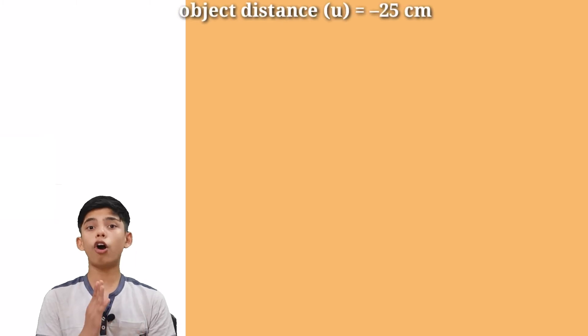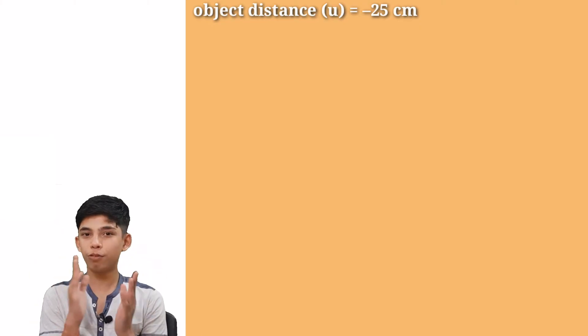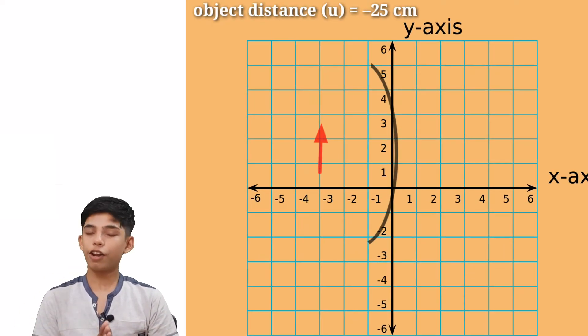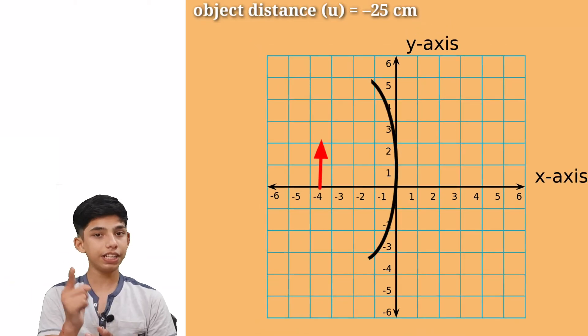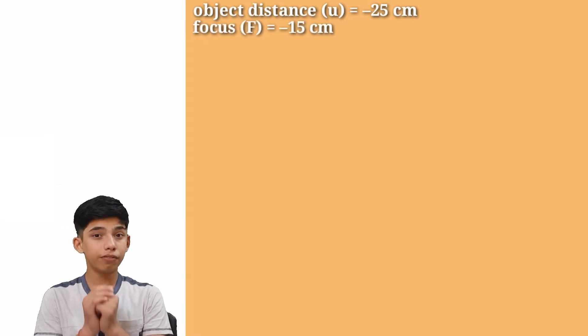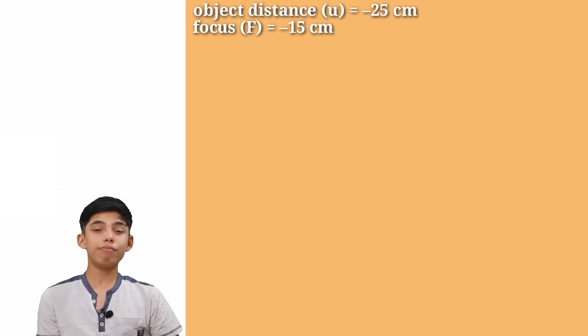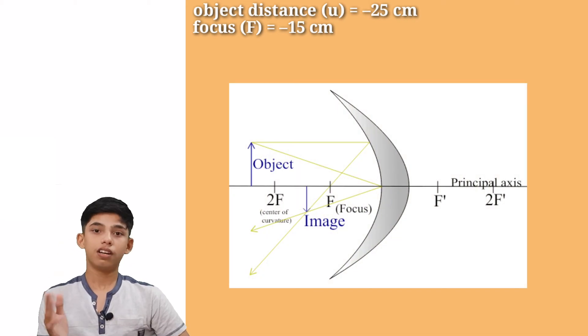Let's write all the things which are given in this question. We have object distance as 25 centimeters but it is going to be positive or negative. We have to give our complete focus putting a correct sign. Our object is on the left side. Left is negative from our sign convention. So we are going to write this minus 25 centimeters. Now we have focus as 15 centimeters. Again, positive or negative? Negative because concave mirror has its focus on the left side. So we are going to write this minus 15 centimeters.